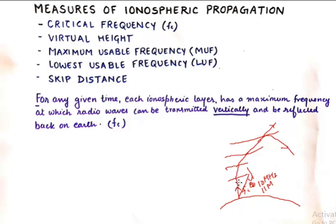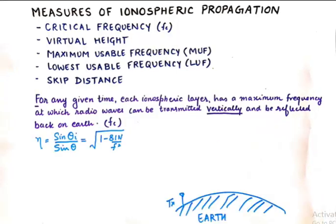This is sent at a zero degree to the normal, so in other words it is sent vertically. Next we have the formula from the Snell's law.